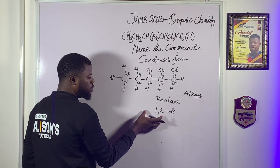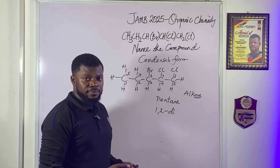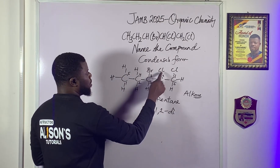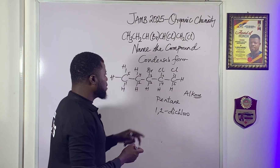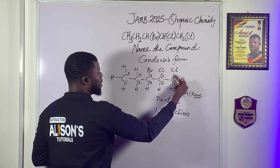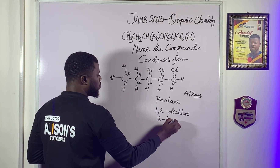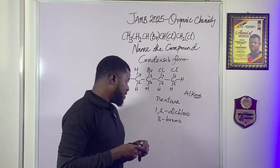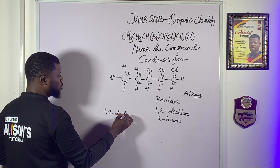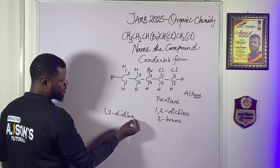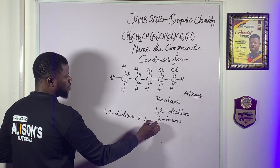Because we have two chlorine atoms, we use the prefix 'di.' If there were three, it would be 'tri,' but here it is just two, so we have 'dichloro.' Continuing the count: on the third carbon we have bromine, so we have '3-bromo.' Putting it together: we have 1,2-dichloro, then 3-bromo, then pentane.